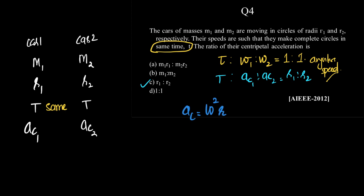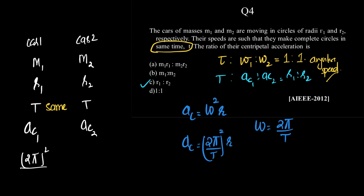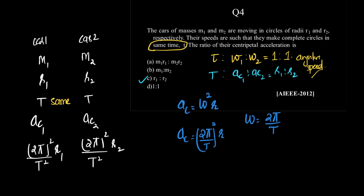The formula for centripetal acceleration is ac = ω²r, and omega equals 2π/T. So ac becomes (2π/T)² × r. Therefore, ac1 = (2π)²/T² × r1, and ac2 = (2π)²/T² × r2.